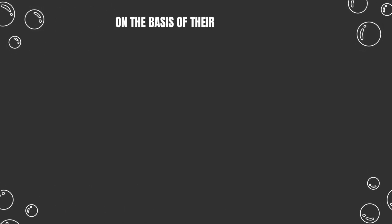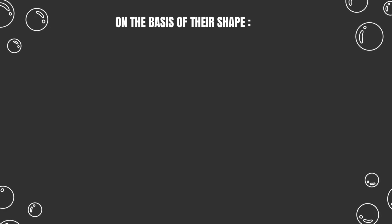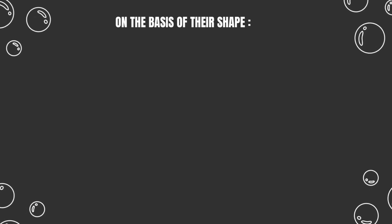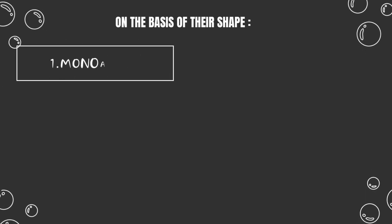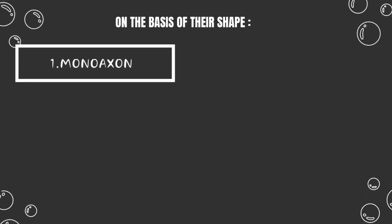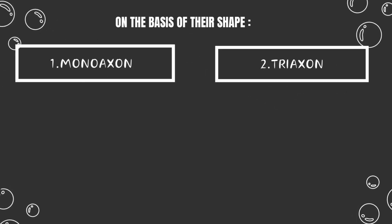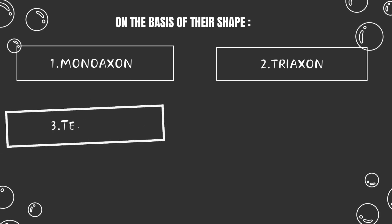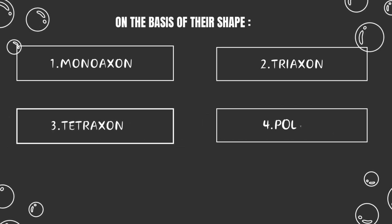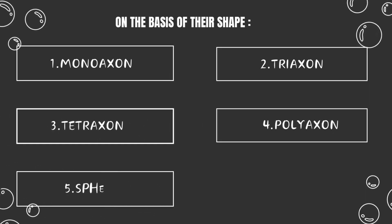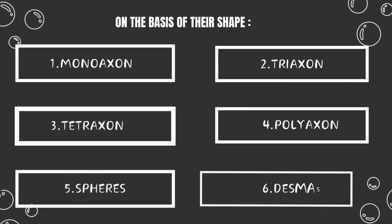On the basis of their shape, spicules are of six types. The spicules are named after their axes and rays. These six types are: monoaxon spicules, triaxon spicules, tetraaxon spicules, polyaxon spicules, spheres, and desmas.